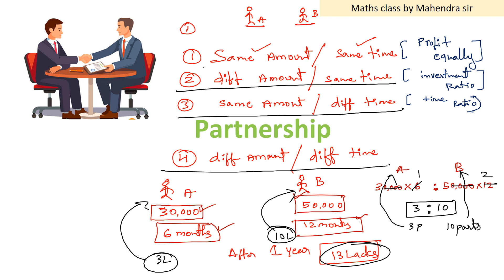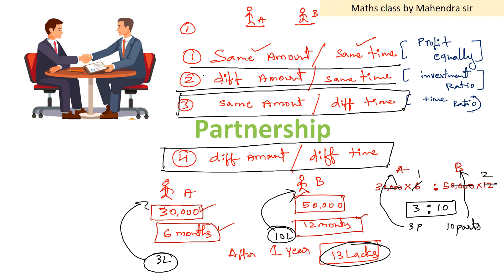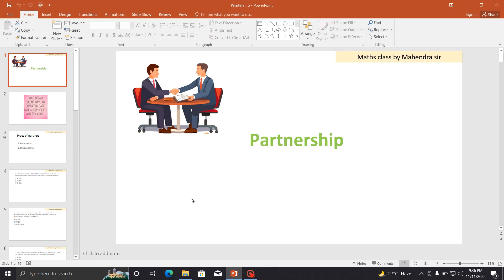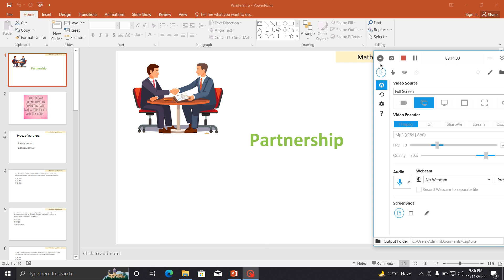These are the only four combinations in partnership. If you know these, you're perfect in this chapter. In part two, we will cover one more small topic — active partner and sleeping partner — and then jump directly into solving problems. I hope everyone understood these four points. Thank you so much, keep smiling, and wait for the second part!